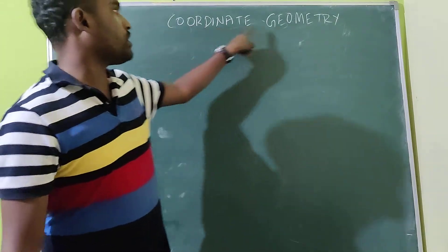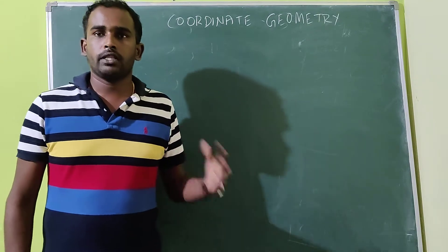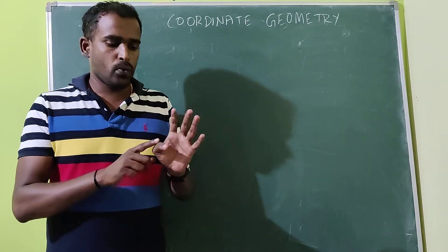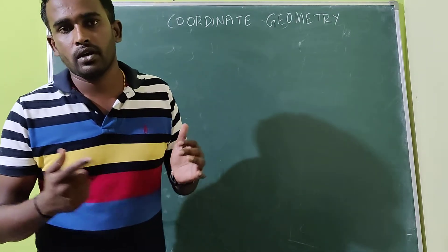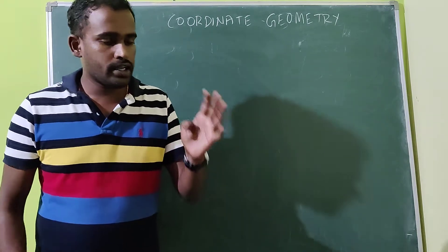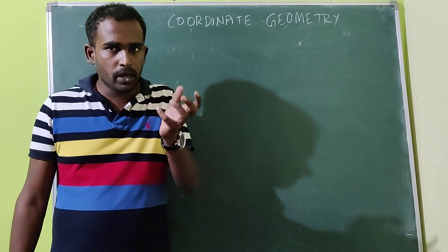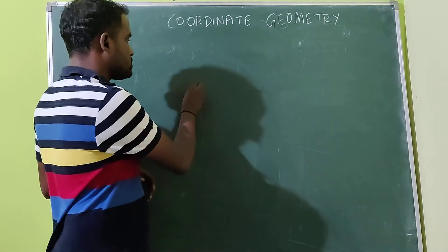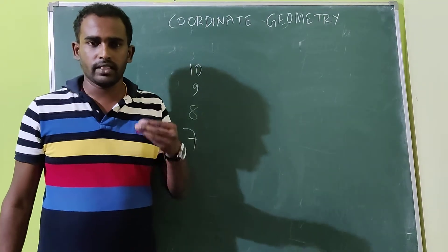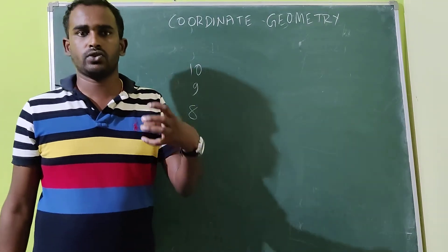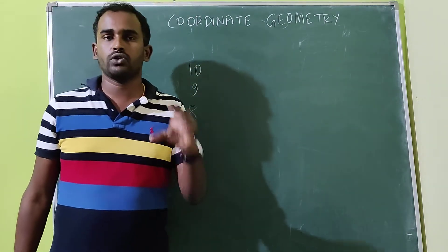That is chapter number three: coordinate geometry. As we all know, we can divide mathematics into three different groups. First is arithmetic, next is algebra, and then geometry. Arithmetic means we can play with only numbers — like nine, eight, ten, seven. They may give certain equations or other concepts, but the main concept of arithmetic completely depends on numbers only.